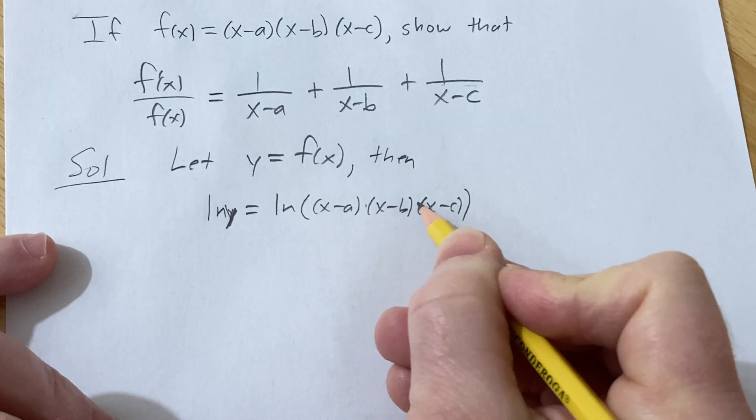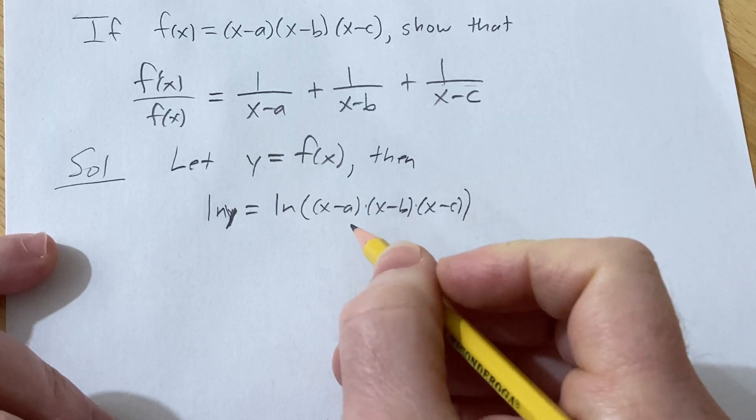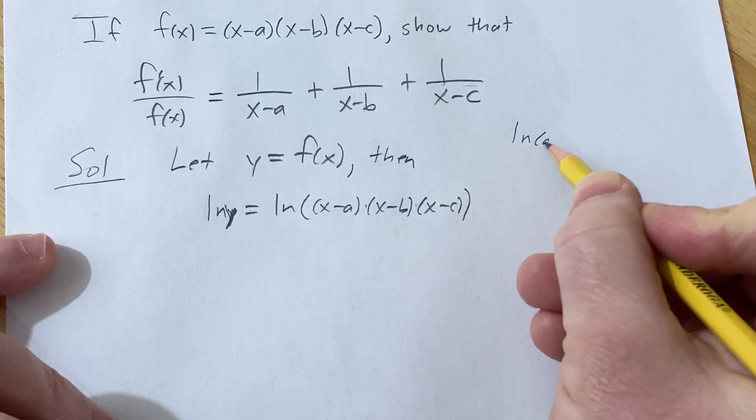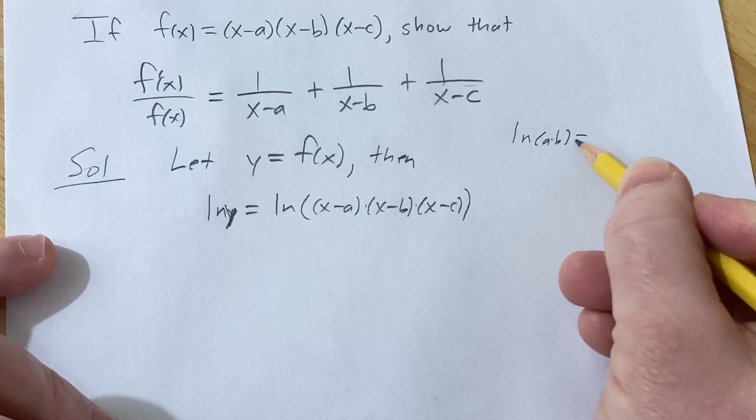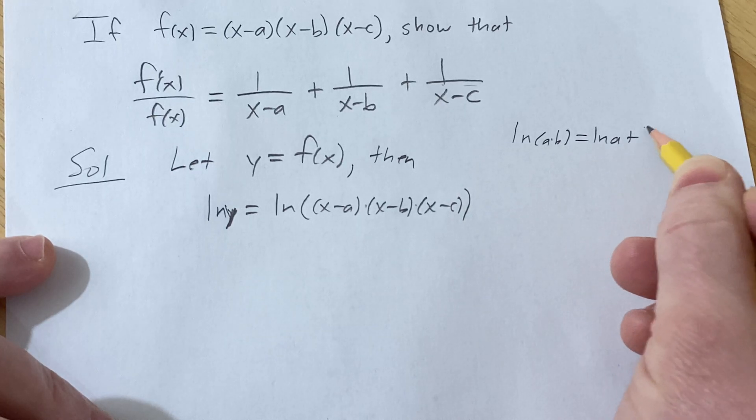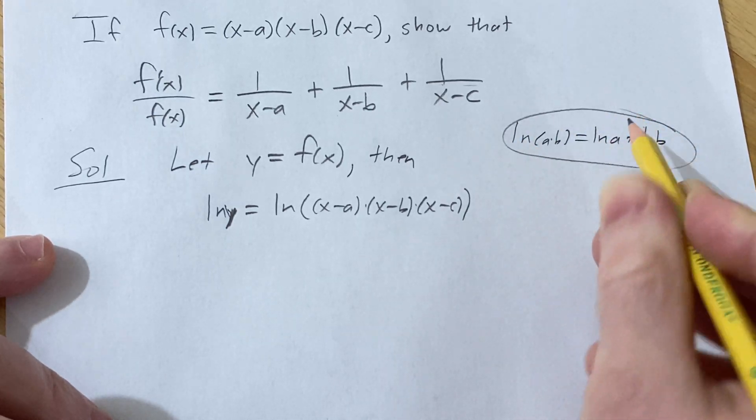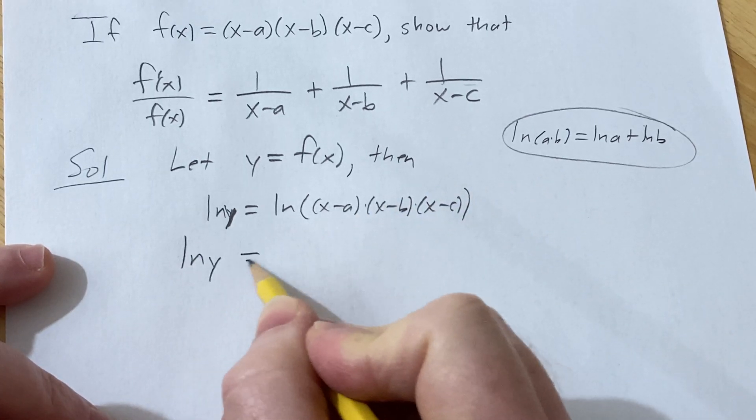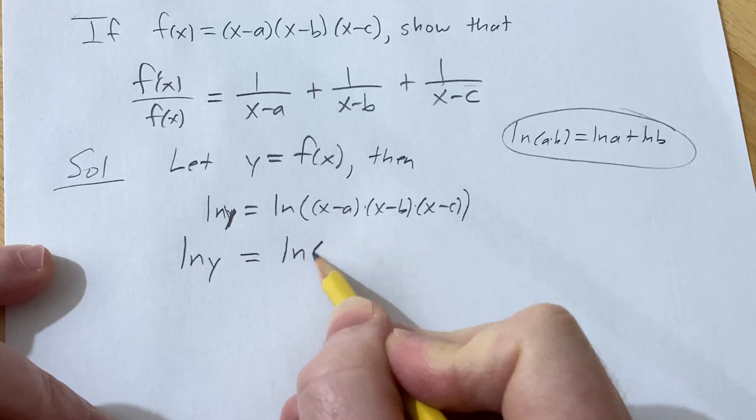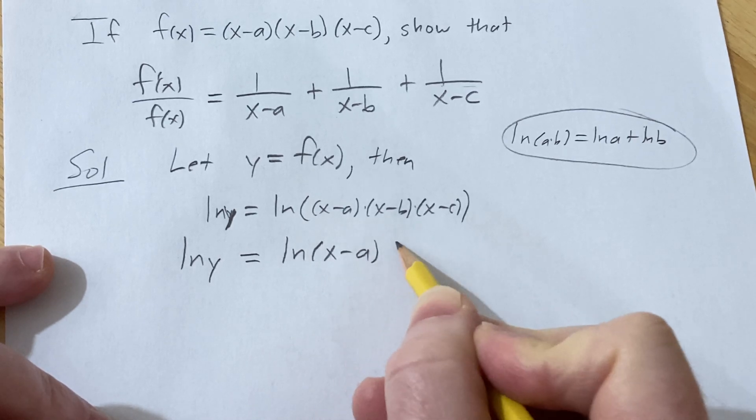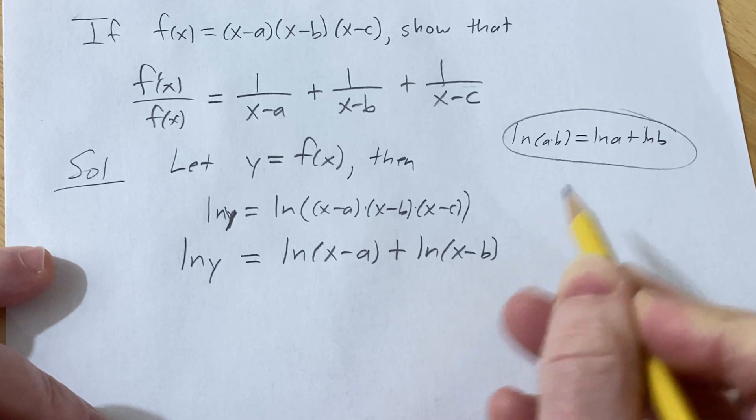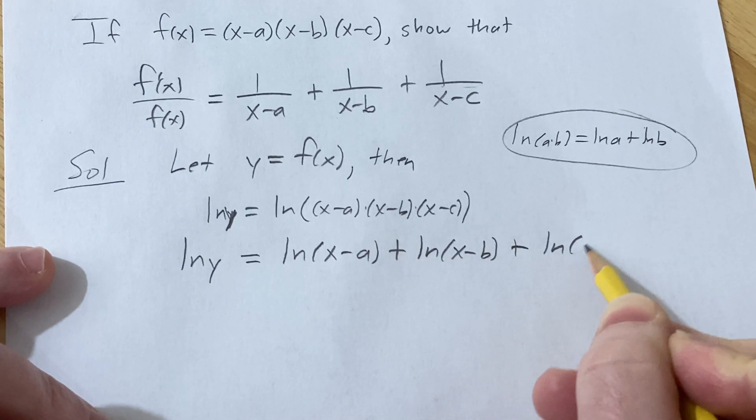And whenever you have the natural log of a product, it becomes the natural log of the sum. Recall if you have, say, just a and b, and a and b are positive, this is equal to ln(a) + ln(b). This is called the product rule for logs. So here we have ln(y) equals ln(x-a) + ln(x-b) + ln(x-c).